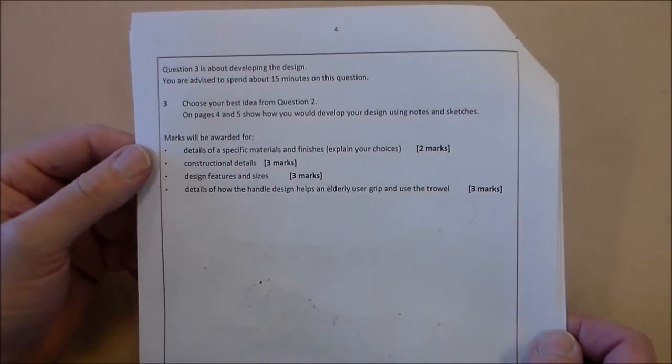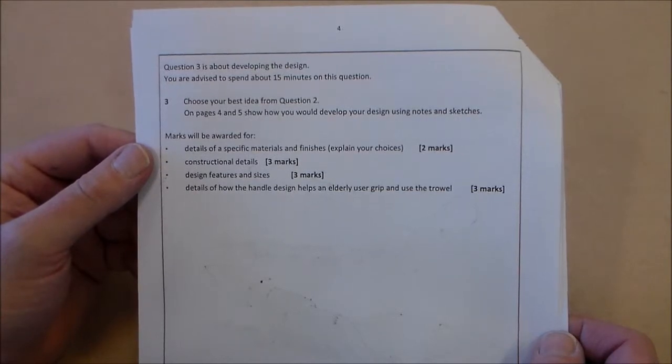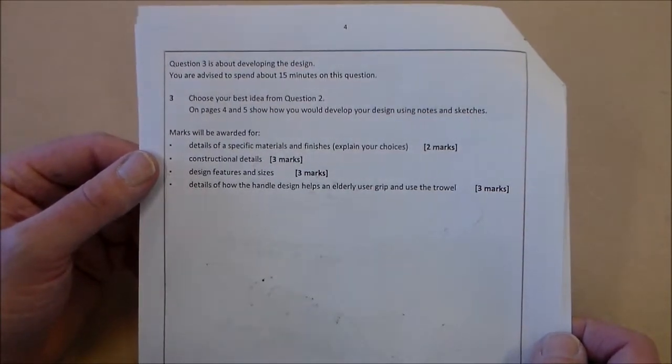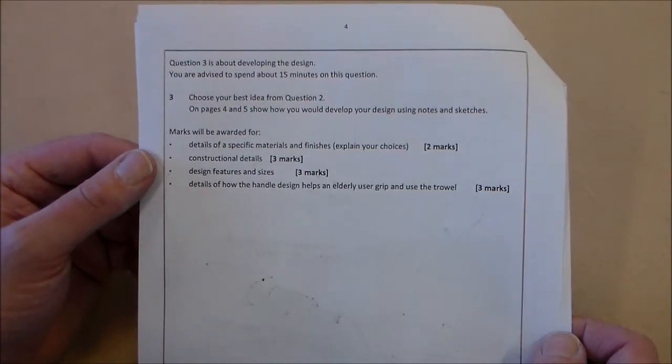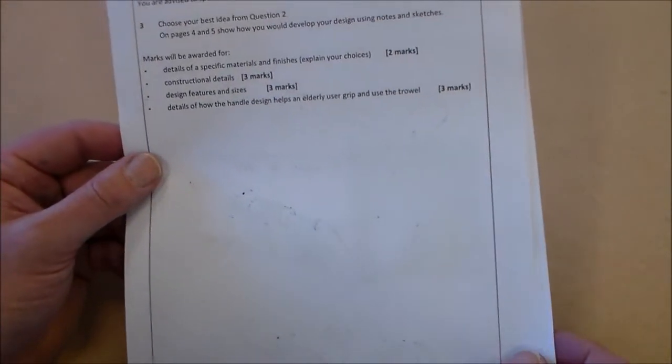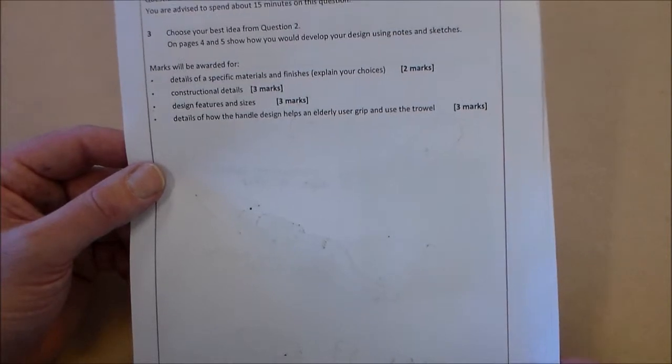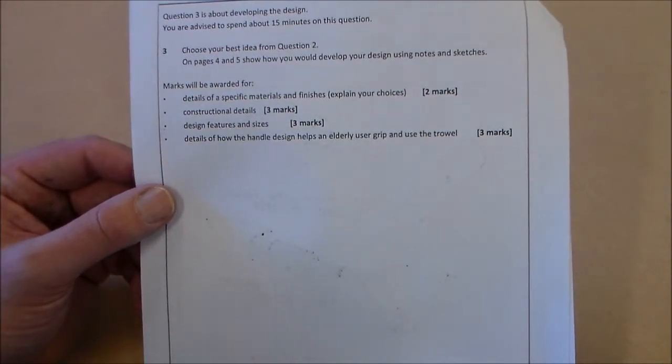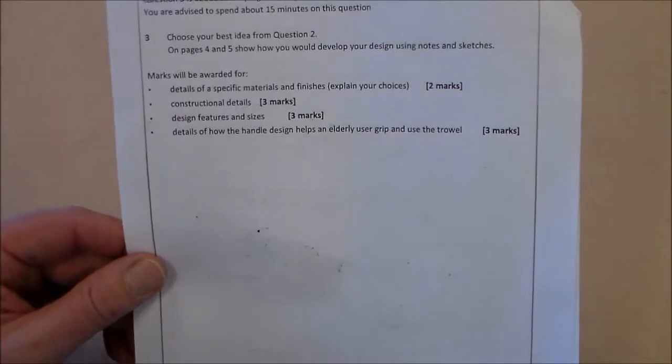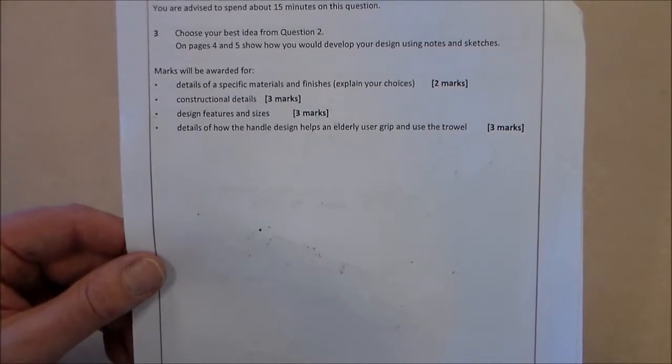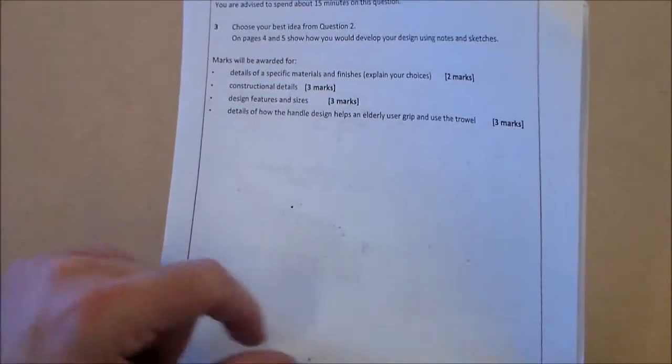Okay, so we're going to look here now at this question. This is question three. And it says about developing the design. Again, it's advised you to spend 15 minutes. If you see 15 minutes, you can see that there's quite a good amount of marks for this question. A quarter of your exam, if you had an hour. It says, choose your best idea from question two. On pages four and five, so this is obviously four and five here, show how you would develop your design using notes and sketches. Marks will be awarded for details of specific materials and finishes and explaining your choices. Constructional details, design features and sizes, details of how the handle helps an elderly user grip and use the trowel. So there's the breakdown of marks.